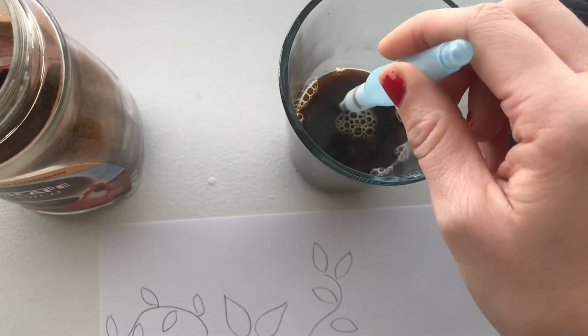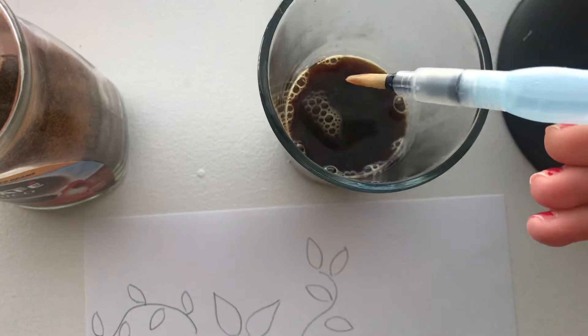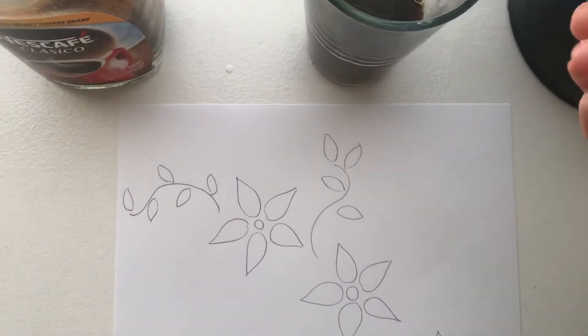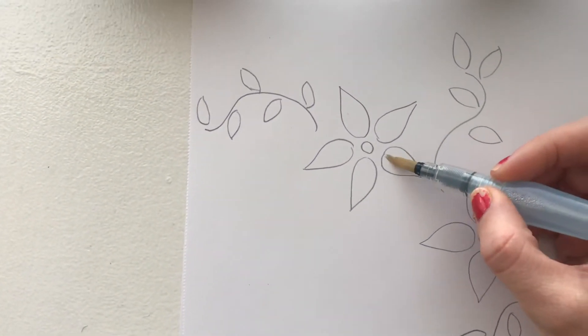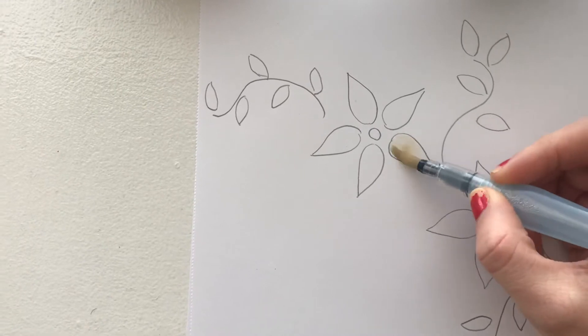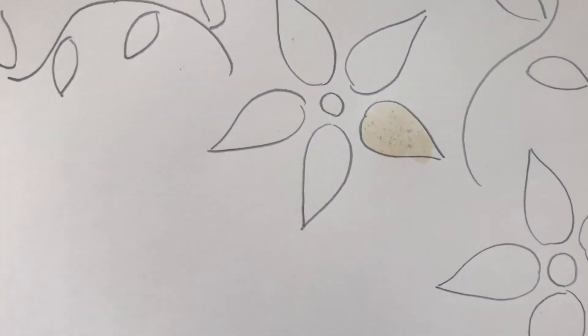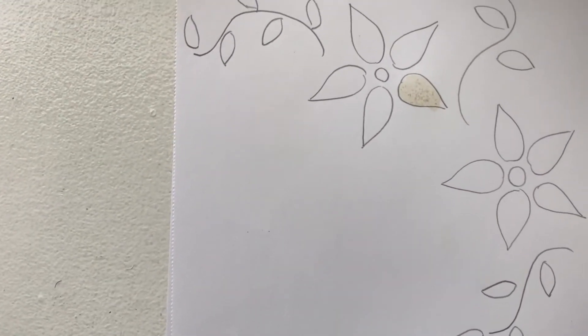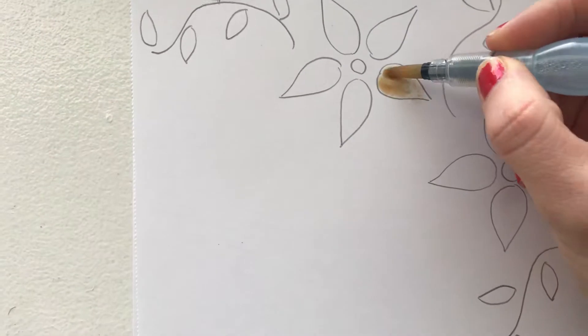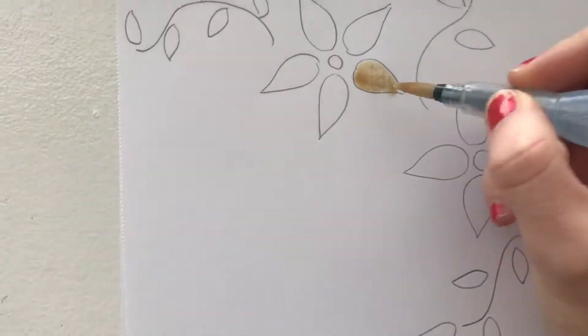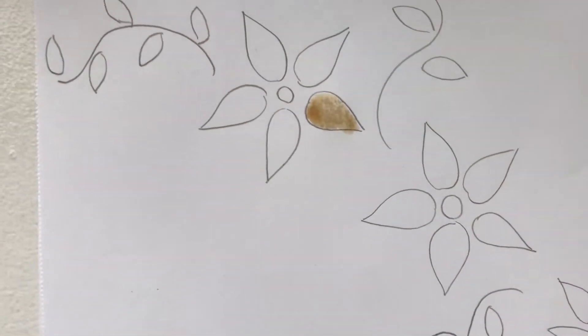So you're gonna take your paintbrush and you dip it into the cup with the coffee and you will slowly paint the flower. Now see how the flowers kind of light and it's not very dark. You can go back and you can add more of the color to make it a little dark. It will be wet and that's okay and it'll dry.